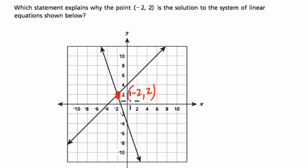It's a solution to the system of equations because it's a point on both of the lines that you're given. This line right here and this line right here cross at that point. So a system is a collection of equations or graphs,